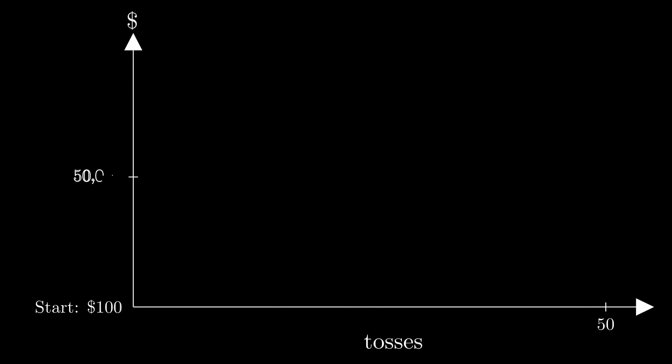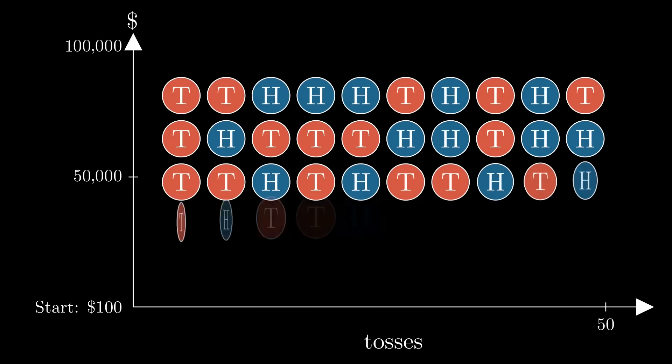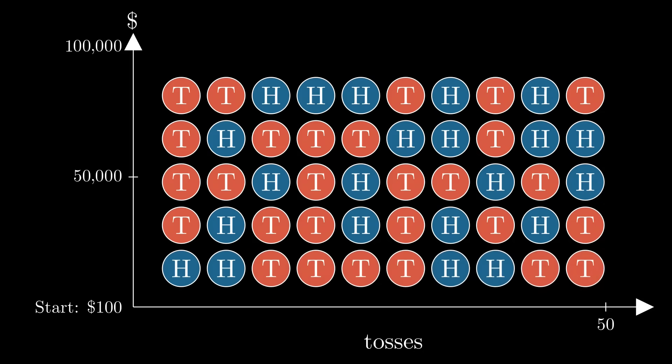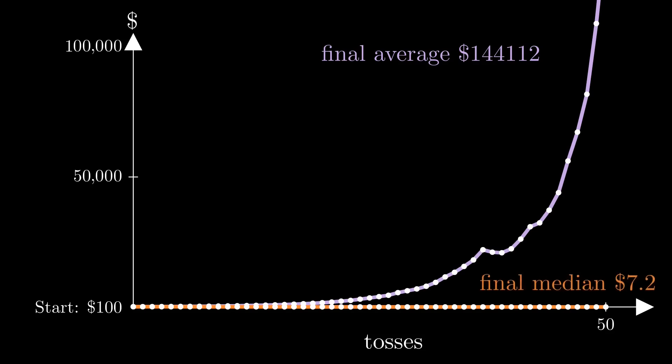Then let's simulate a million people, each starting with $100 and playing 50 rounds. Here's a graph of their average wealth. As expected, their average grows exponentially. However, their median and mode plummet to a measly $7.20.